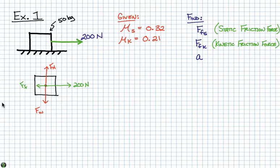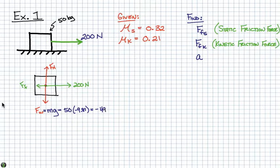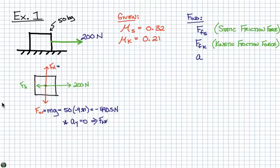Now we can do some basic calculations. The force of weight equals mass times the acceleration due to gravity, which is 50 times negative 9.81, giving us negative 490.5 newtons. Since the acceleration in the y direction is zero, the net force in the y direction must also be zero. Therefore, our weight and normal force must be equal and opposite, so the normal force is 490.5 newtons.